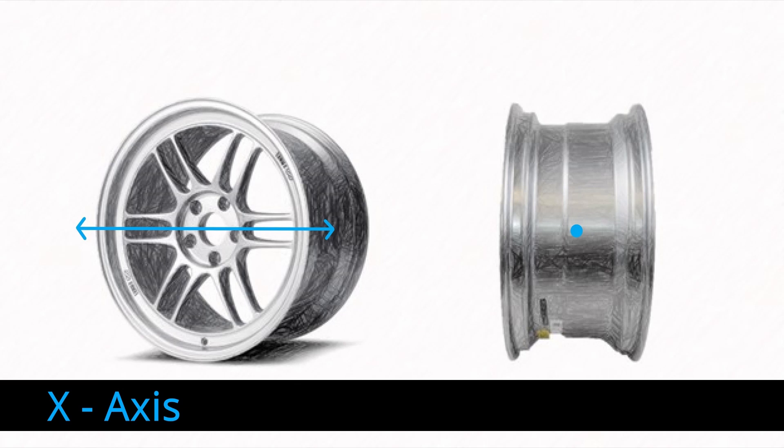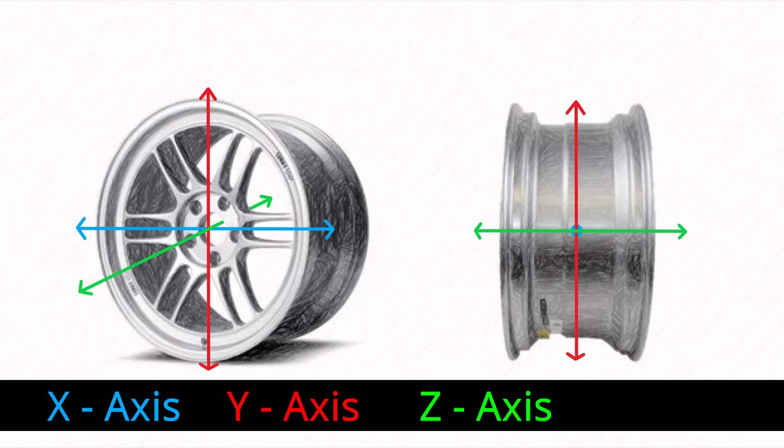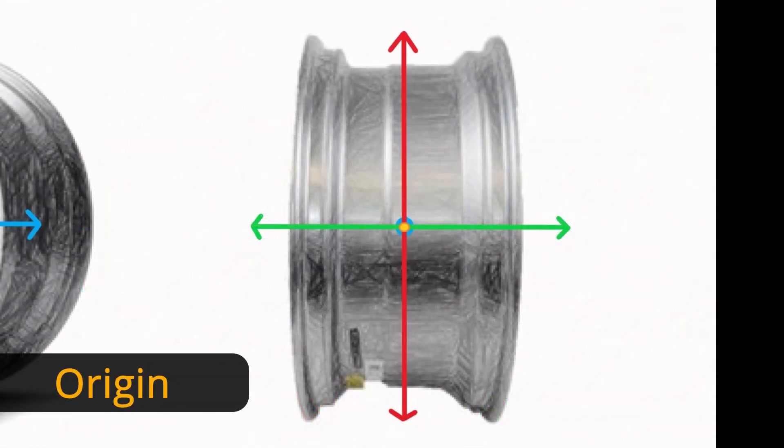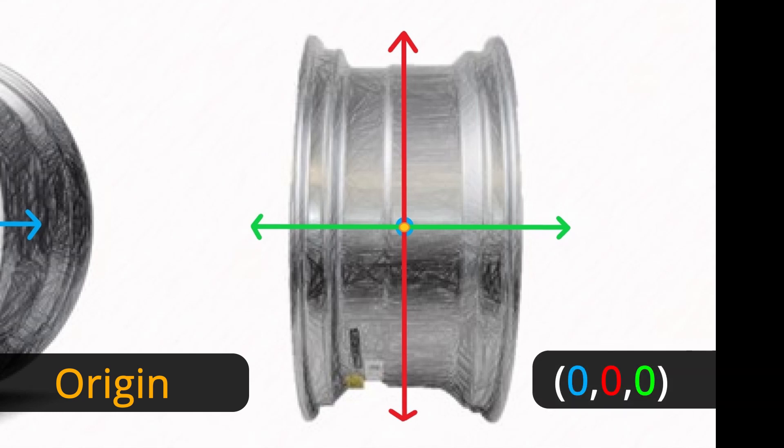There are three axes of a wheel. Let's call them X, Y, and Z. Let's make X represent left to right, then the Y will be up and down, and Z will be in and out.